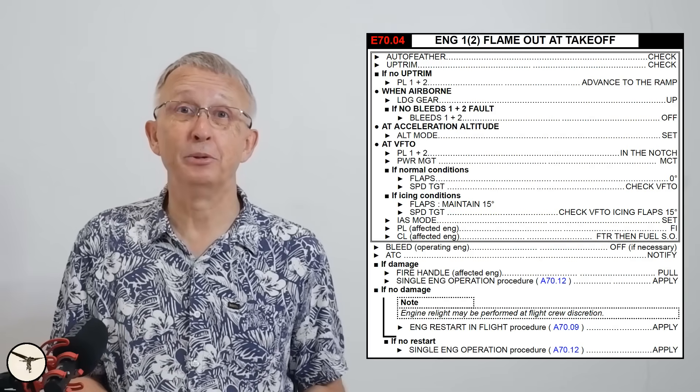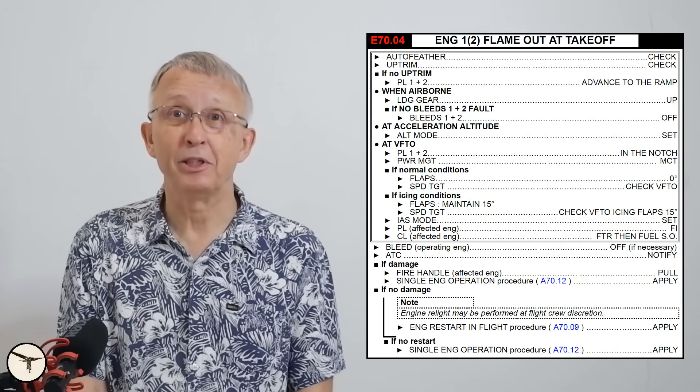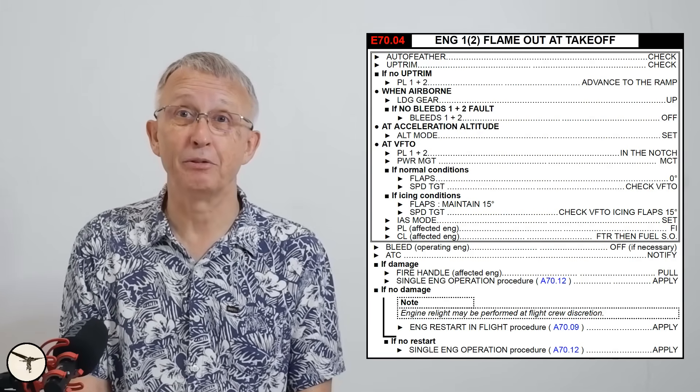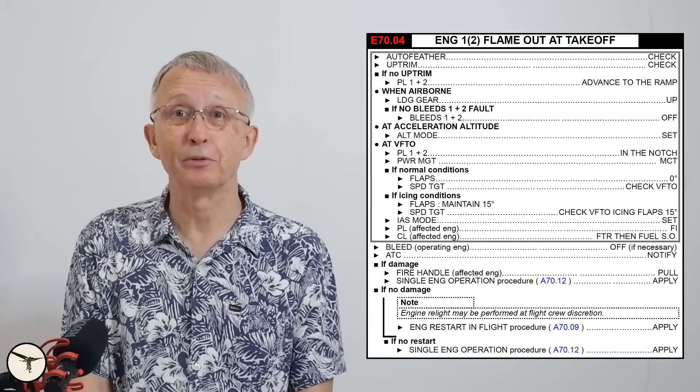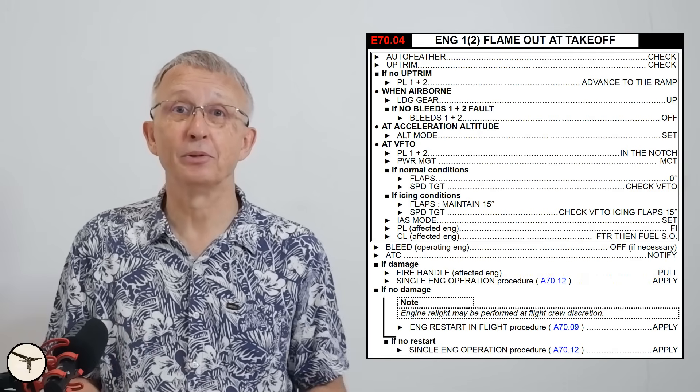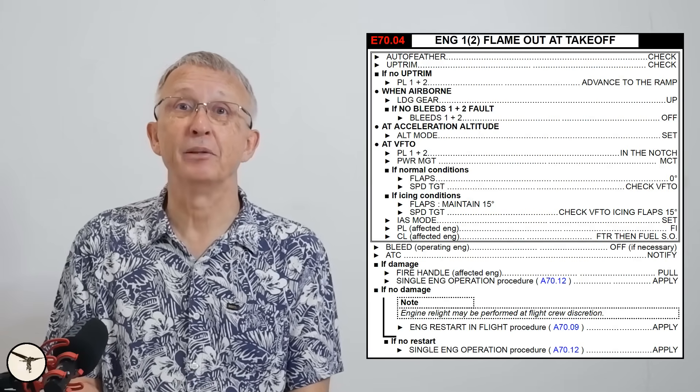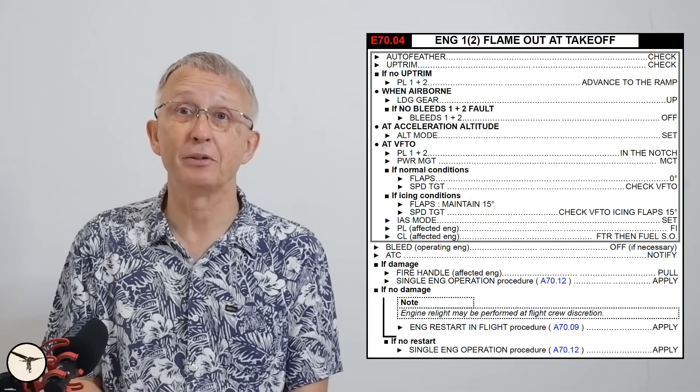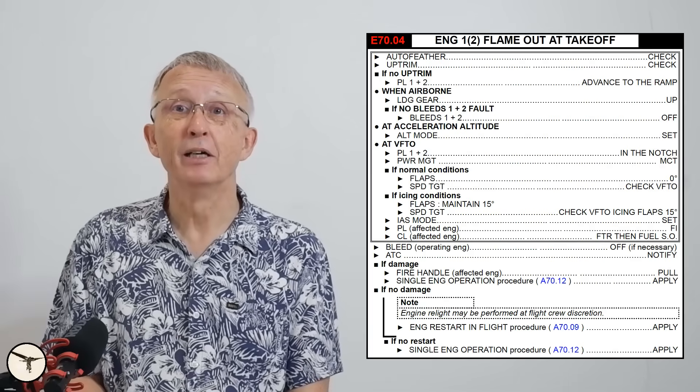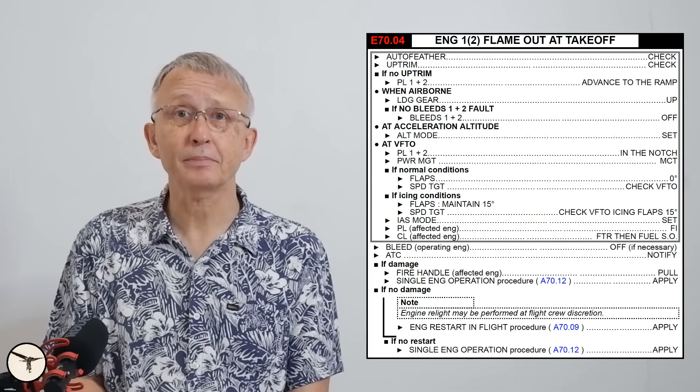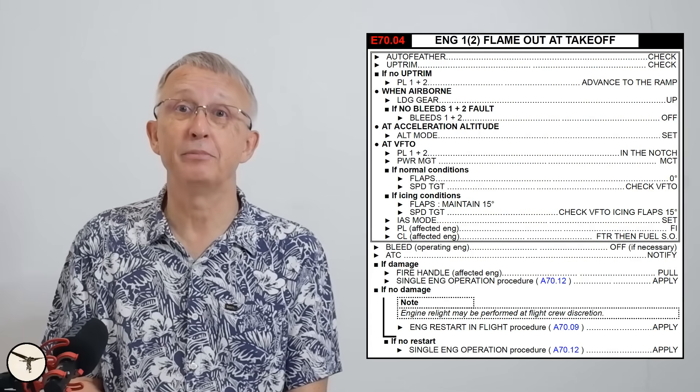Ask any ATR pilot what they will do if an engine fires after V1, and you will likely hear their response like this. Check up trim and auto feather, if no up trim, both power levers to the ramp. When airborne, gear up. If no bleed, 1 plus 2 fault light, select them off. At acceleration altitude, select ALT mode. At VFTO, find attack of speed. Set power levers in a notch. Select MCT, and if normal conditions, flap 0. Check the speed target is VFTO. If icing conditions, maintain flap 15, and VFTO for flap 15. Select IES mode. Affected power lever to flight idle. Affected condition lever to feather, then fuel shut off.